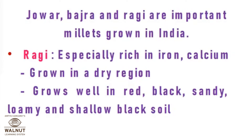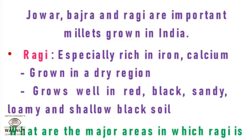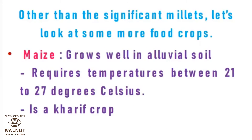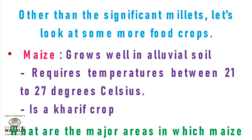Ragi is especially rich in iron and calcium. It is grown in dry regions and grows well in red, black, sandy loamy, and shallow black soil — again, shallow black soil means thickness less than 30 centimeters. List the states where ragi is grown. Next is maize, which grows well in alluvial soil and requires temperature between 21°C to 27°C. It is a kharif crop.